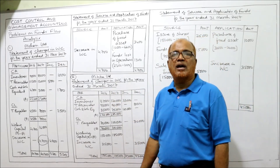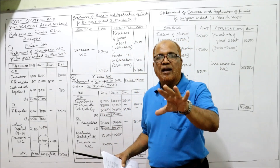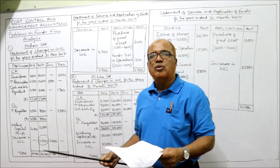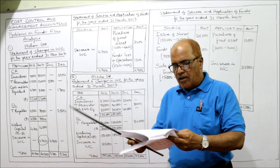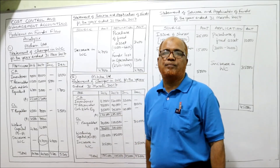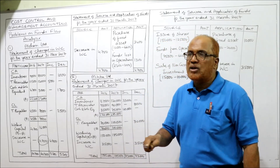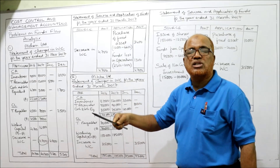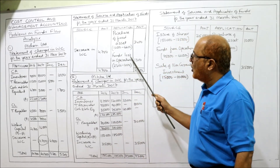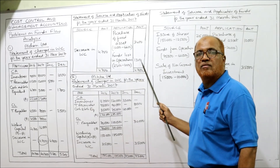This is the statement of changes in working capital. Now, statement of source and application of funds — do not take current assets and current liabilities here. Share capital: 25,000 to 25,000, no change, ignore. Reserves and surplus: last year 2,300, current year 1,000 — decreased, so funds lost in operation. 1,300 is the loss. Funds lost in operation — application side.